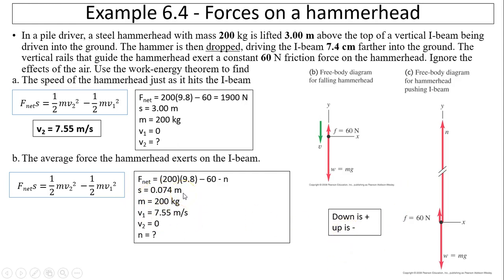Displacement is positive because it's downward. And V1 is positive because downward. V2 equals 0 because it stops. So what does N equal to? Substitute everything. You should get N equals 79,000 newtons upward. So the direction is upward.